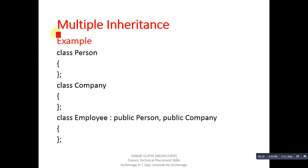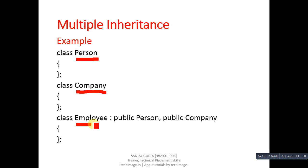First, see this example in which two base classes are available: the first one is Person and the second one is Company. Both classes are being inherited in a single derived class which is Employee. If we inherit more than two base classes in a single derived class, this type of inheritance is known as multiple inheritance.